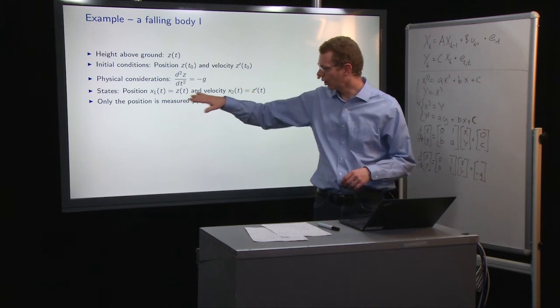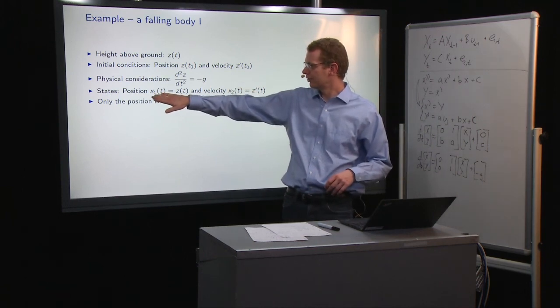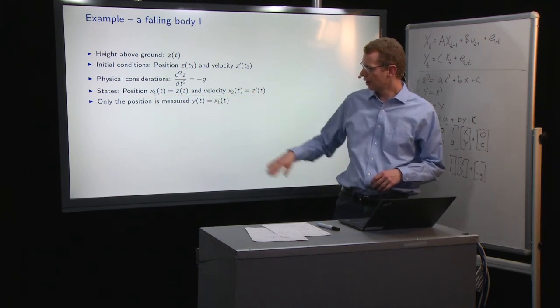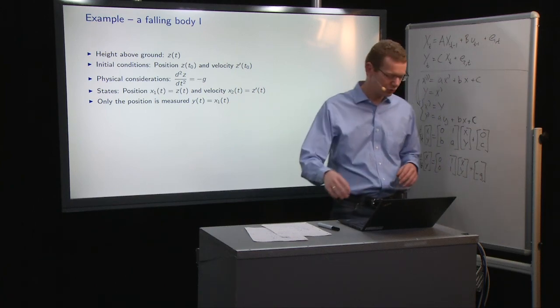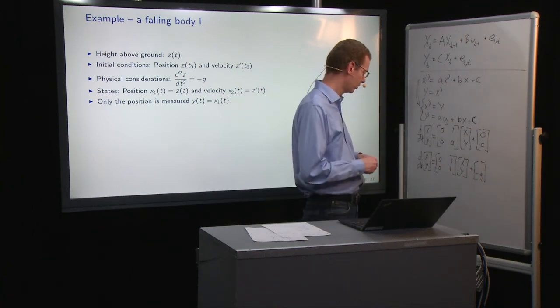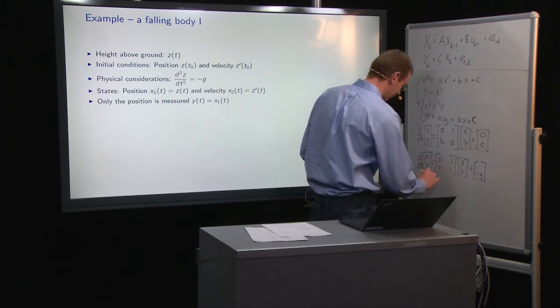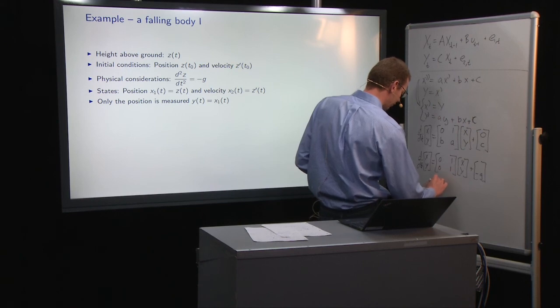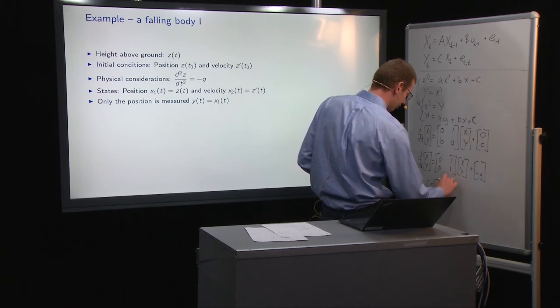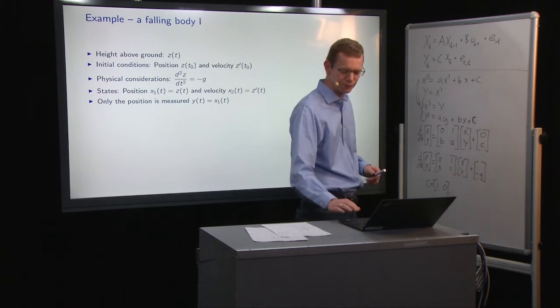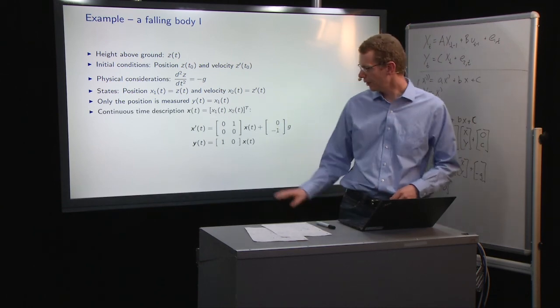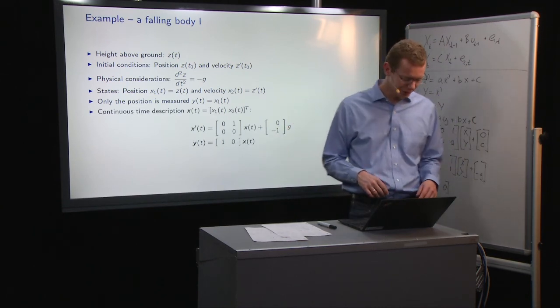And here comes, you can say, the same walk-through, that we define a state for the position, a state for the velocity, and then we say that in this case we only observe the position, so that means that we will have c to be equal to a 1 and a 0. So we have this representation as is also given over there.